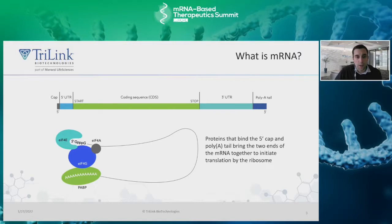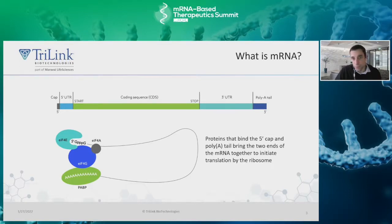The 5' UTR is not translated into protein, but does aid in the overall expression of the mRNA, as it contains the Kozak sequence that functions as the protein translation initiation site. Having a 5' UTR that contains a strong Kozak sequence can significantly increase levels of expression of your target protein.